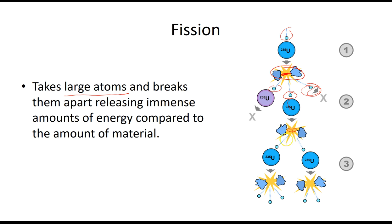In the chain reaction, splitting one atom releases energy and more neutrons, which split more atoms — this grows at an exponential rate. Only certain atoms are fissile; uranium-235 is the common example. We split it apart by bombarding it with neutrons, energy is released as heat, and those released neutrons split more uranium atoms, releasing more heat.